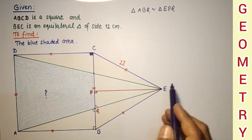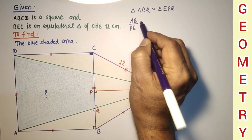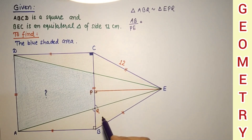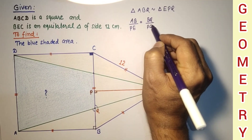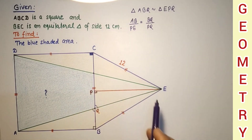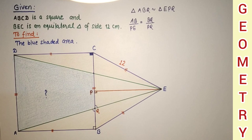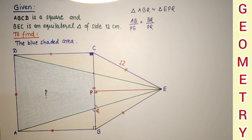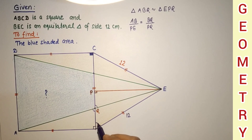We can say that AB over PE equals BQ over PQ. CE is 12 centimeters, EB is 12 centimeters, BA is 12 centimeters — all sides are 12 centimeters, because all sides are equal in a square and also in the equilateral triangle. This angle is 60 degrees as it is an equilateral triangle.